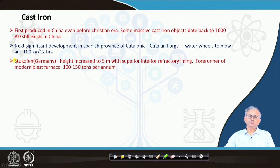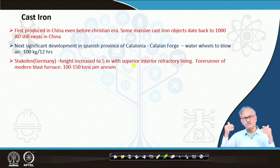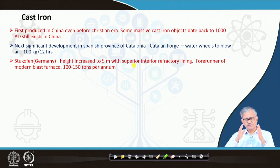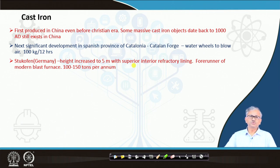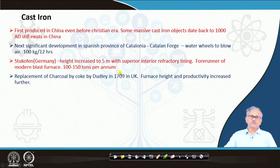Then came the Stuchofen furnace in Germany — its height was increased to 5 meters and it had superior refractory lining to restrict heat loss to the atmosphere. Its shape is more or less like a modern blast furnace, and it is called the forerunner of the modern blast furnace. It used to produce 100 to 150 tons per annum.